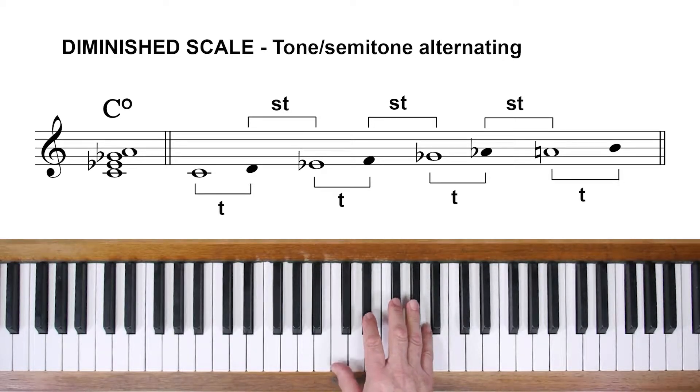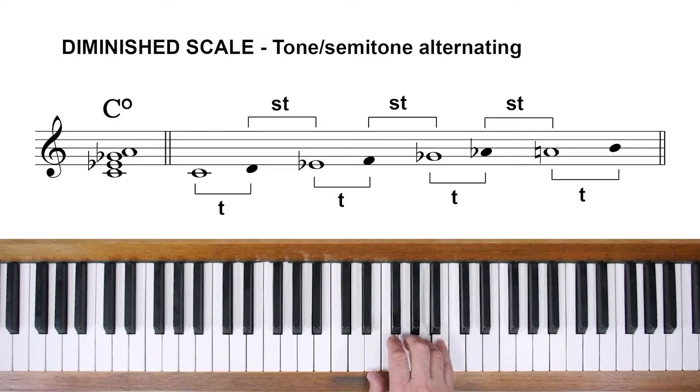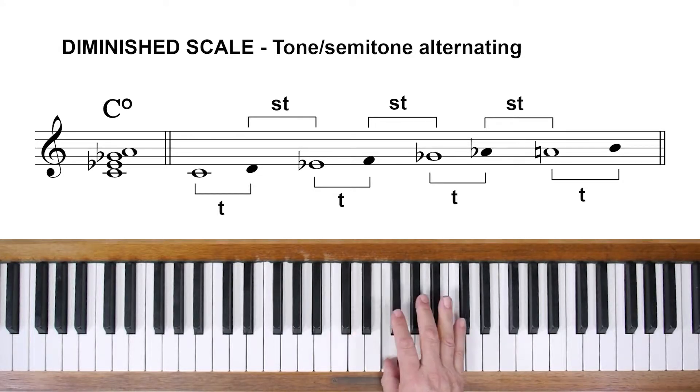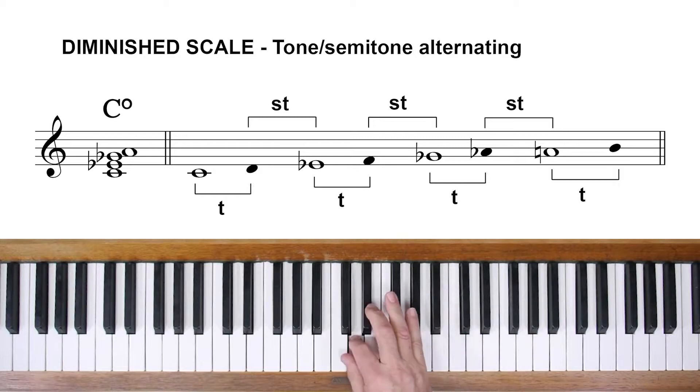So here are the notes of the chord. We're going to add a D above the C, an F above the E flat, an A flat above the G flat, and a B above the A. The white notes are the notes of the chord. The notes we have added in between create a scale that is tone-semitone alternating.